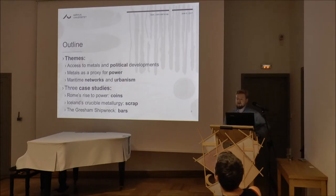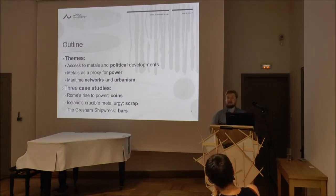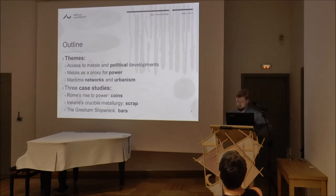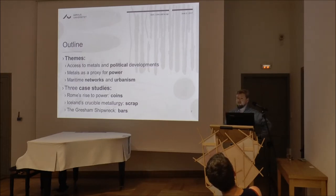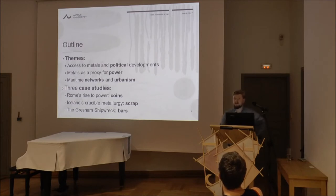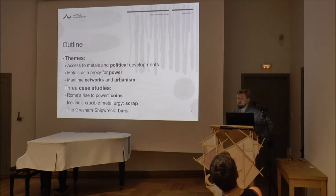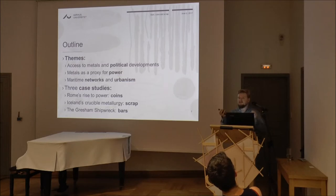The first case study is on silver coinage from the western Mediterranean, some of the earliest silver coinage from around 500 to 100 BCE. The second case study takes a big chronological and geographical shift to the Viking north, looking at the issue of recycling where metal resources aren't available. Thirdly, a medieval shipwreck in the Thames estuary, which will show a frozen moment in time of metals in circulation. These very different case studies bring together the same theme: the importance of metals and how they move and develop networks, but also how they sustain networks.